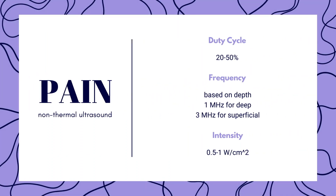Moving on to ultrasound to help decrease pain and inflammation and increase healing: you would use non-thermal ultrasound with a duty cycle of 20 to 50 percent. The low duty cycle prevents the ultrasound from becoming hot. The frequency is based on depth — superficial structures at 1 to 2 centimeters deep use 3 megahertz, while deep structures at 3 to 5 centimeters deep use 1 megahertz. The intensity is between 0.5 and 1 watts per centimeter squared, and the duration should be 5 to 10 minutes.